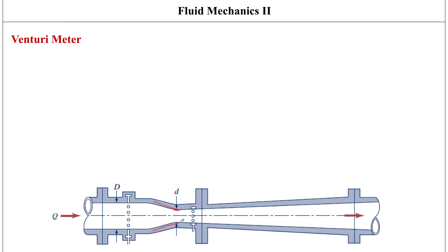This is the throat area, and after it there is a very gradual expansion downstream. Because of this gradual expansion, flow separation is also eliminated in this downstream portion of the device as well. The fluid is basically decelerating in this portion.